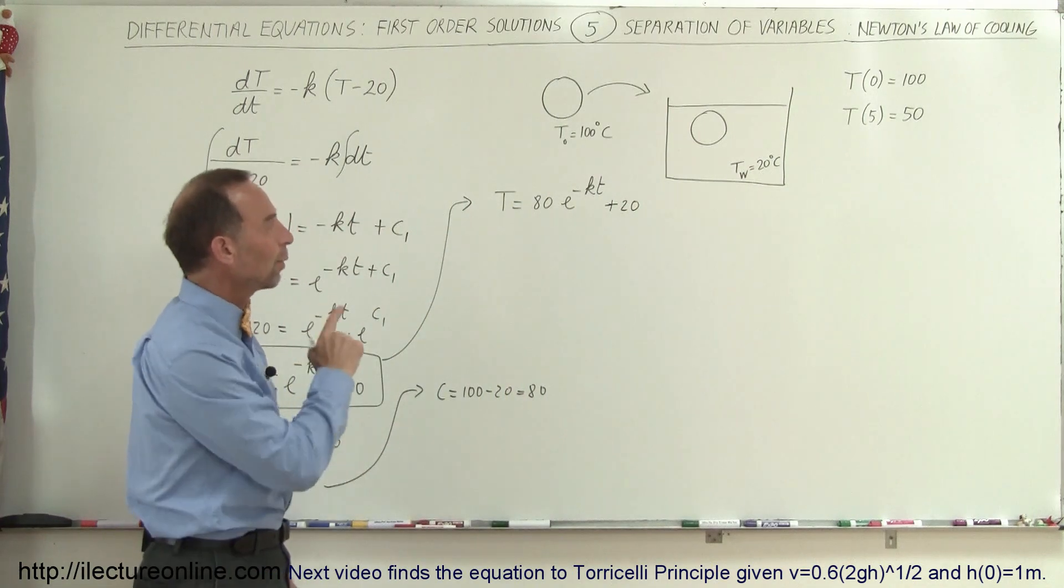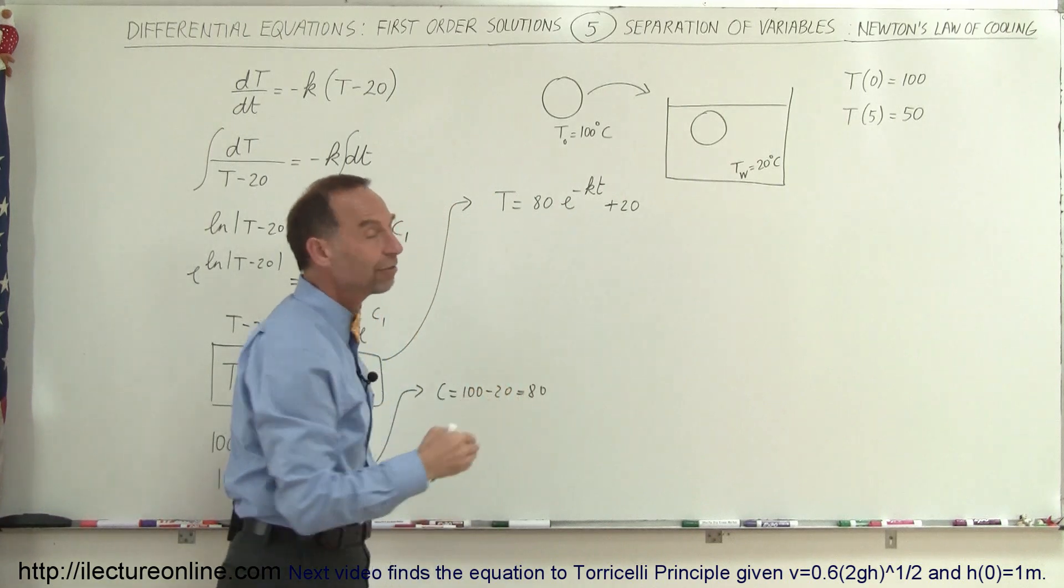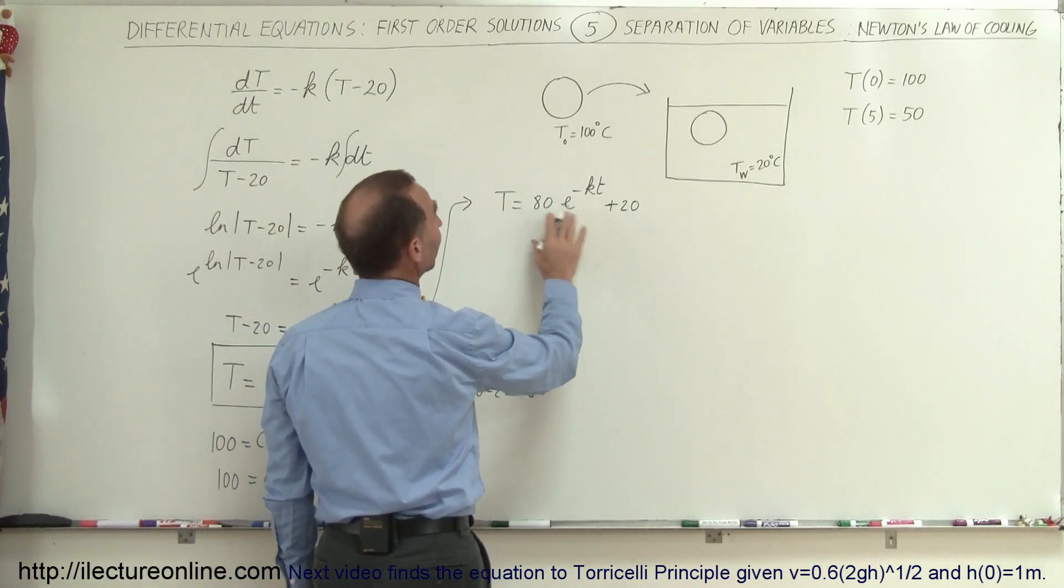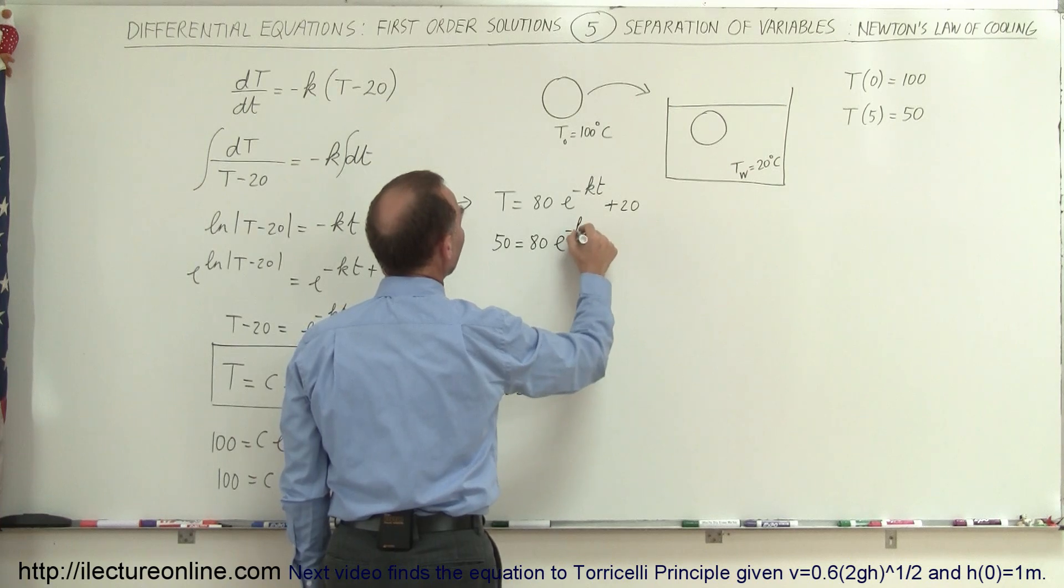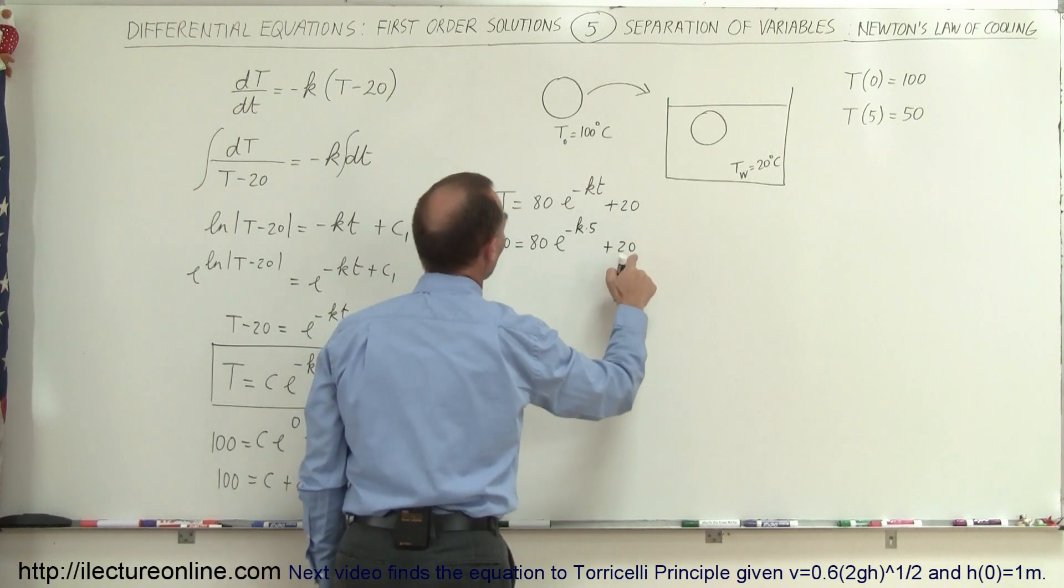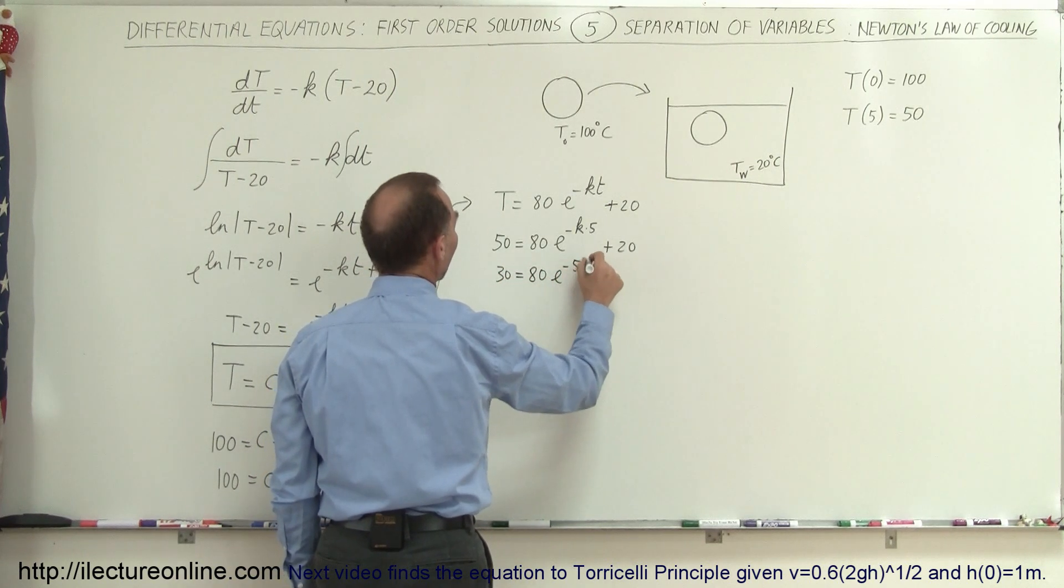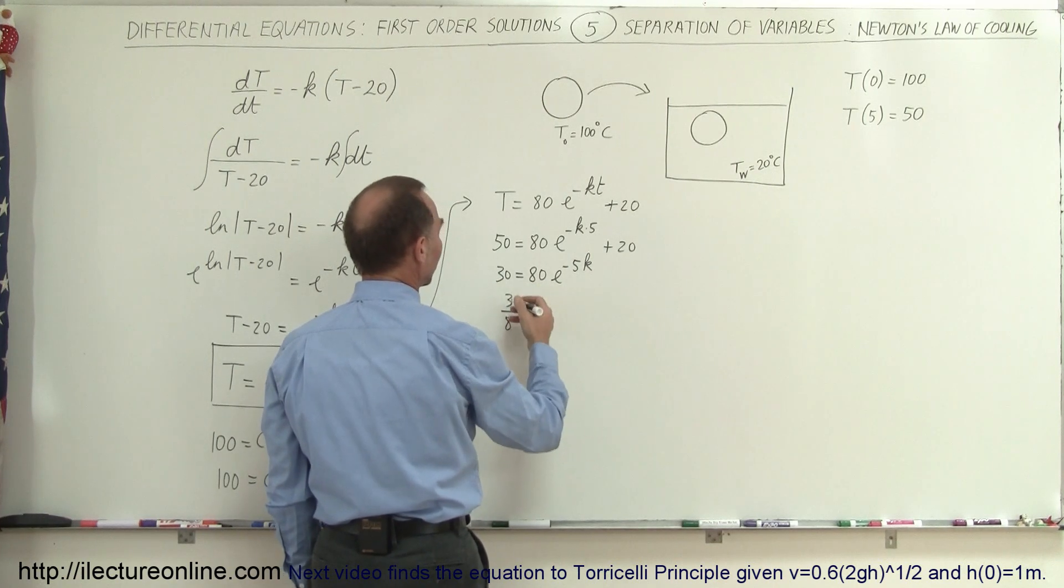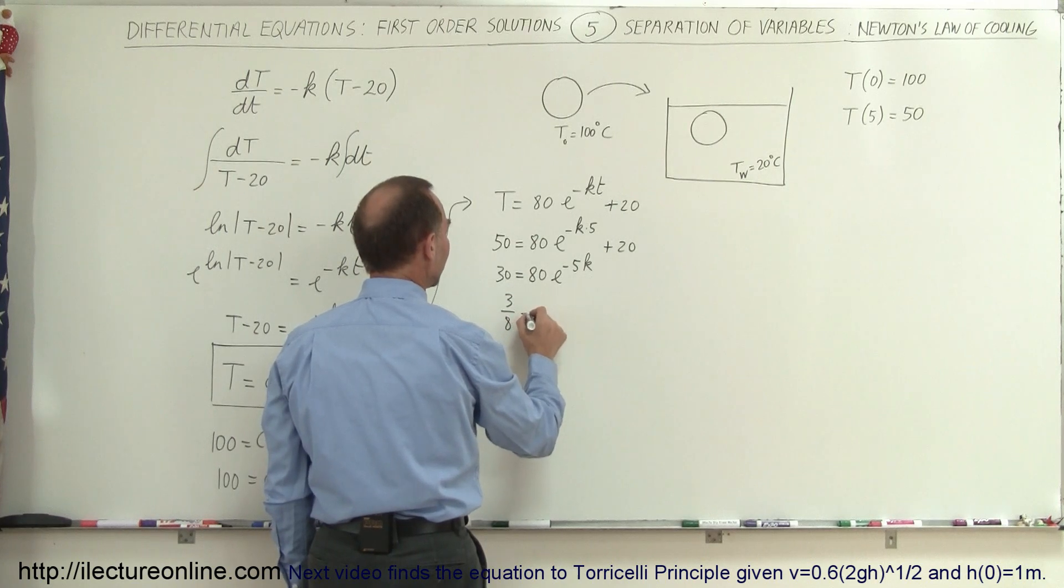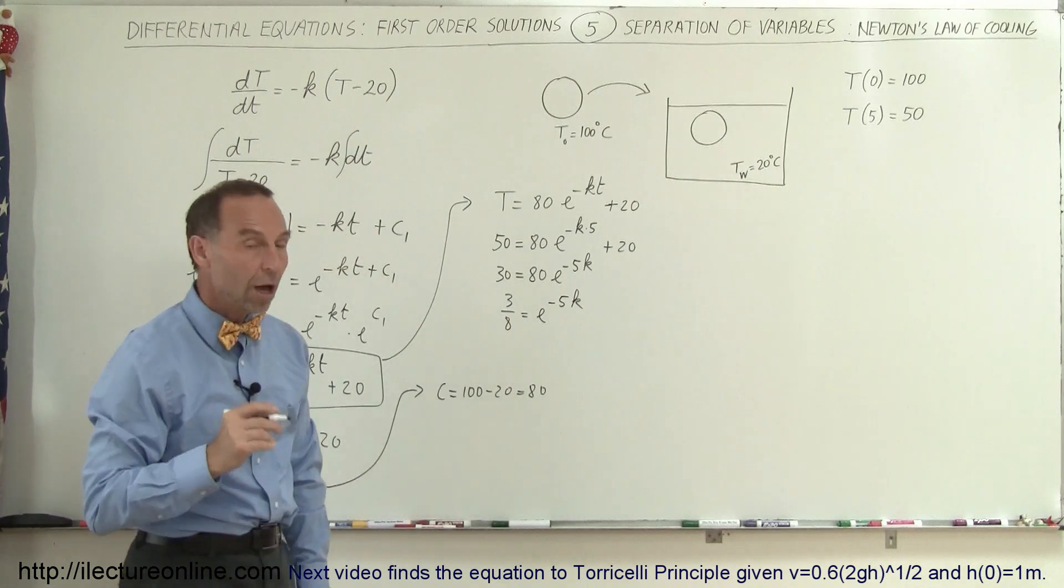Next, we want to solve for K, and we're going to use this information to do so. When t equals 5 seconds, T equals 50. So I can write 50 equals 80 times E to the minus K times 5, plus 20. Bringing the 20 across, I get 30 equals 80 E to the minus 5K. Dividing both sides by 80, I get 3/8 equals E to the minus 5K. Now I want to take the log of both sides.